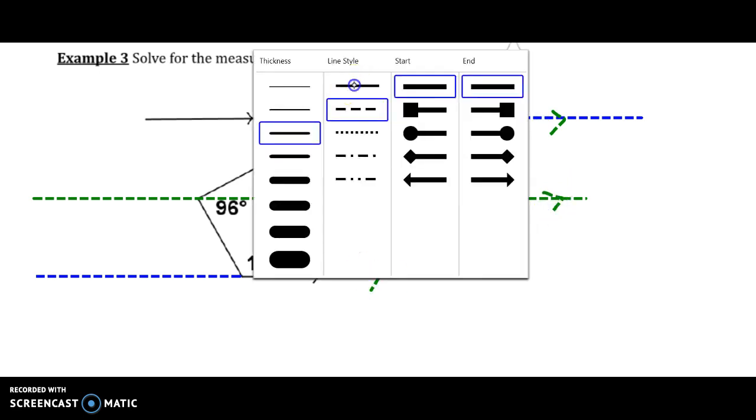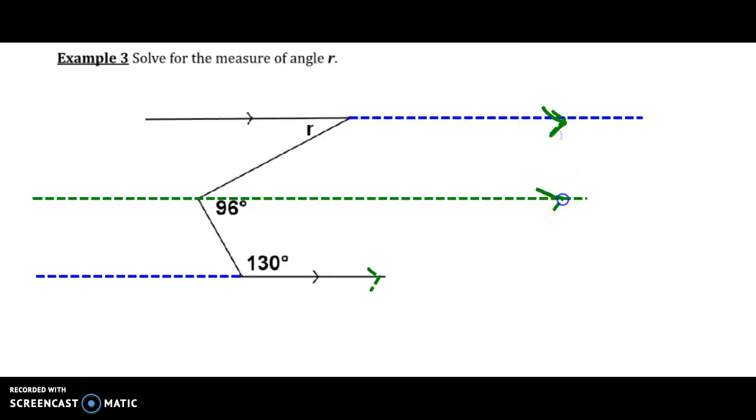Through a point not on a given line, or two given lines, you can draw a single line that is parallel to those. So we're trying to figure out the measure of angle R over here. That is our objective.